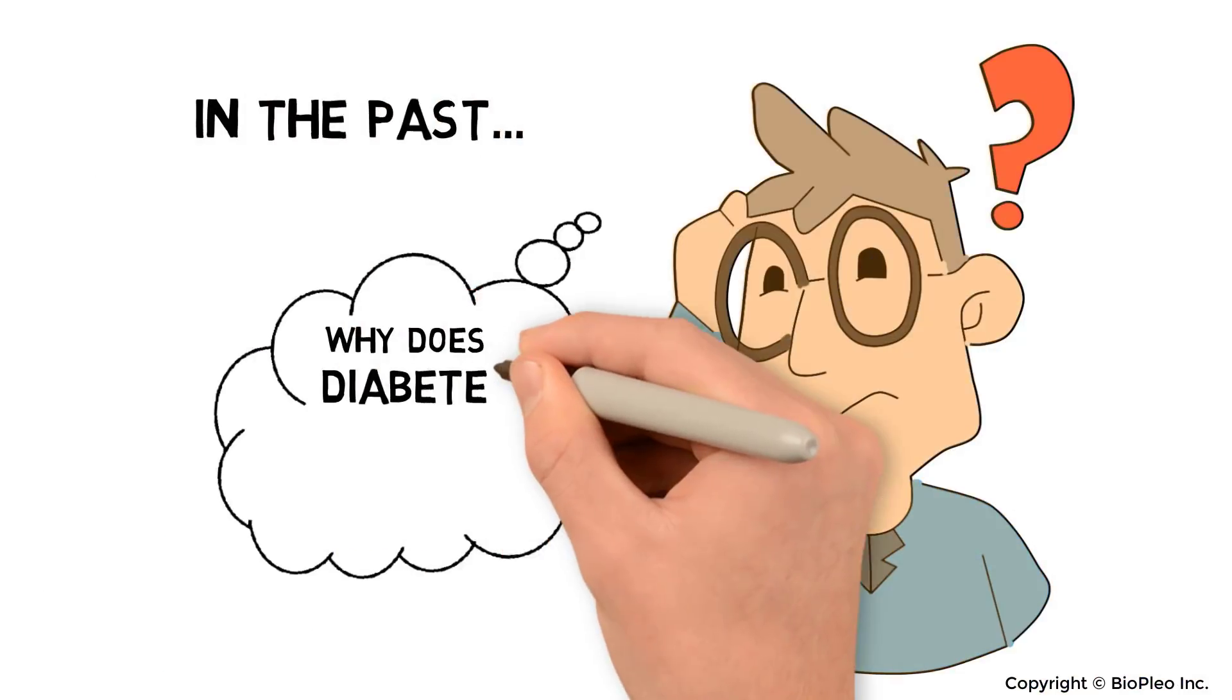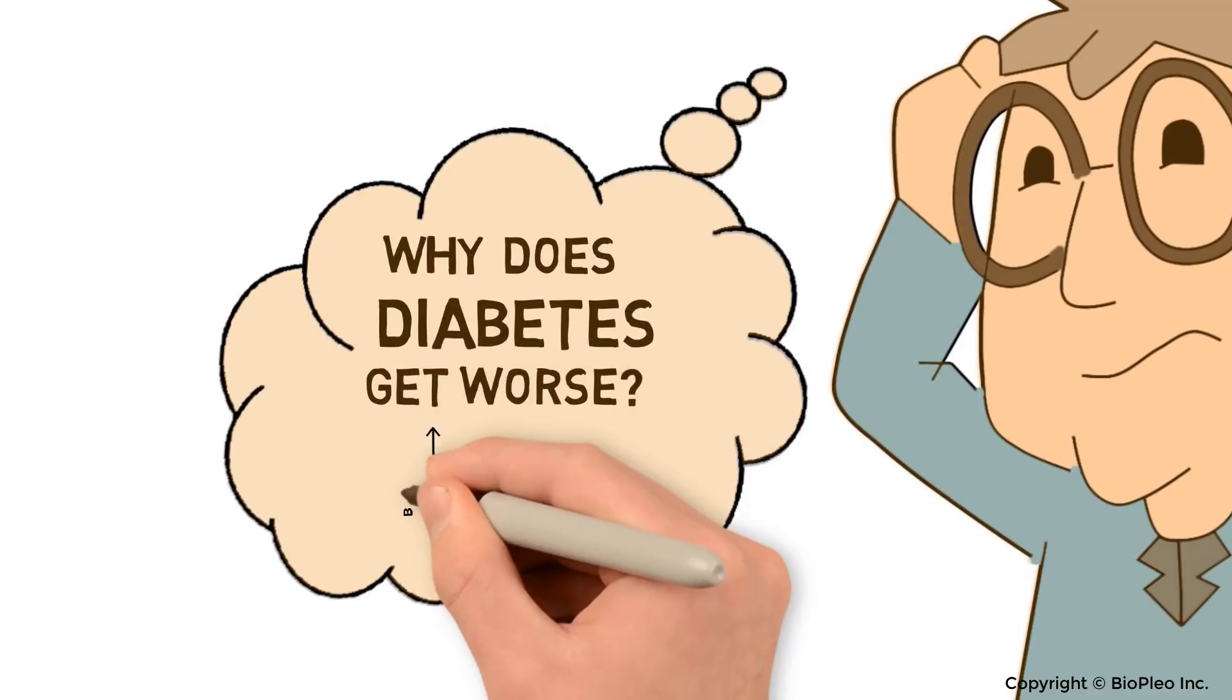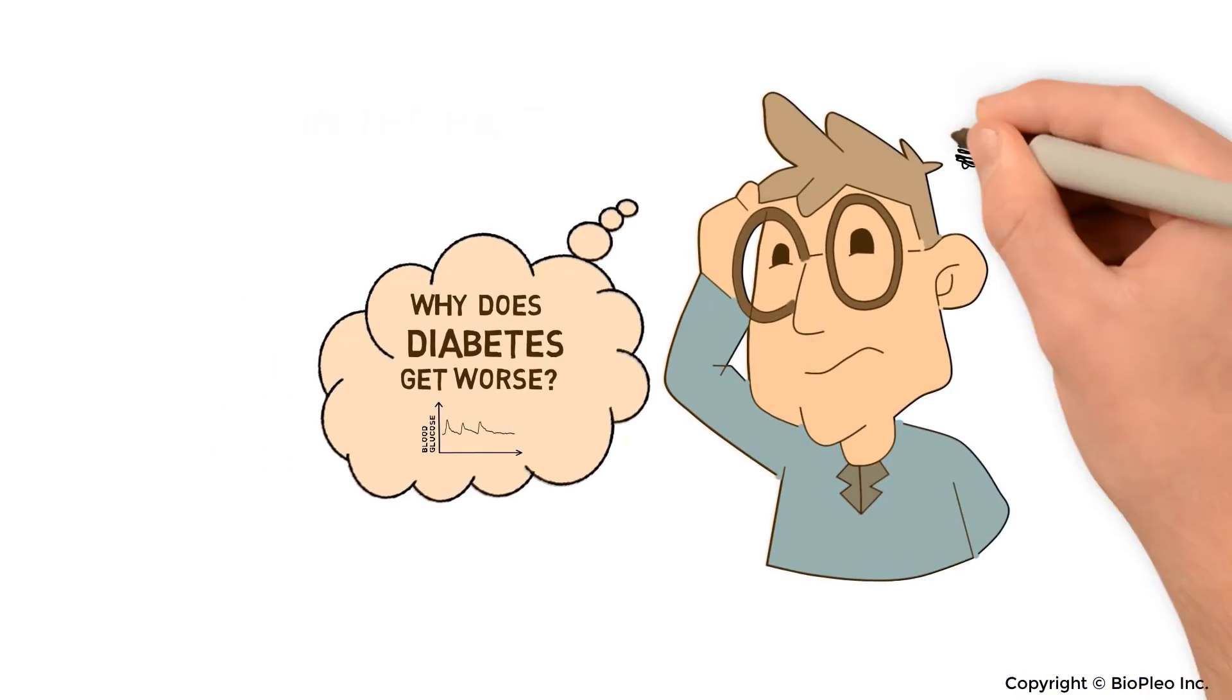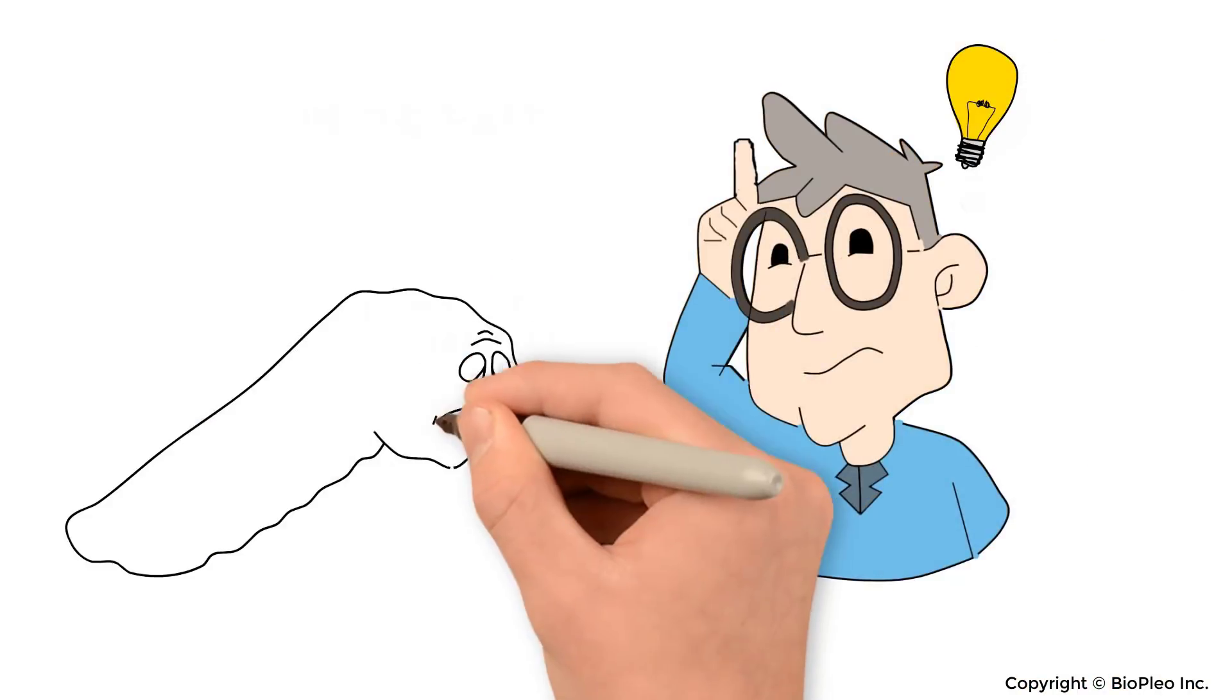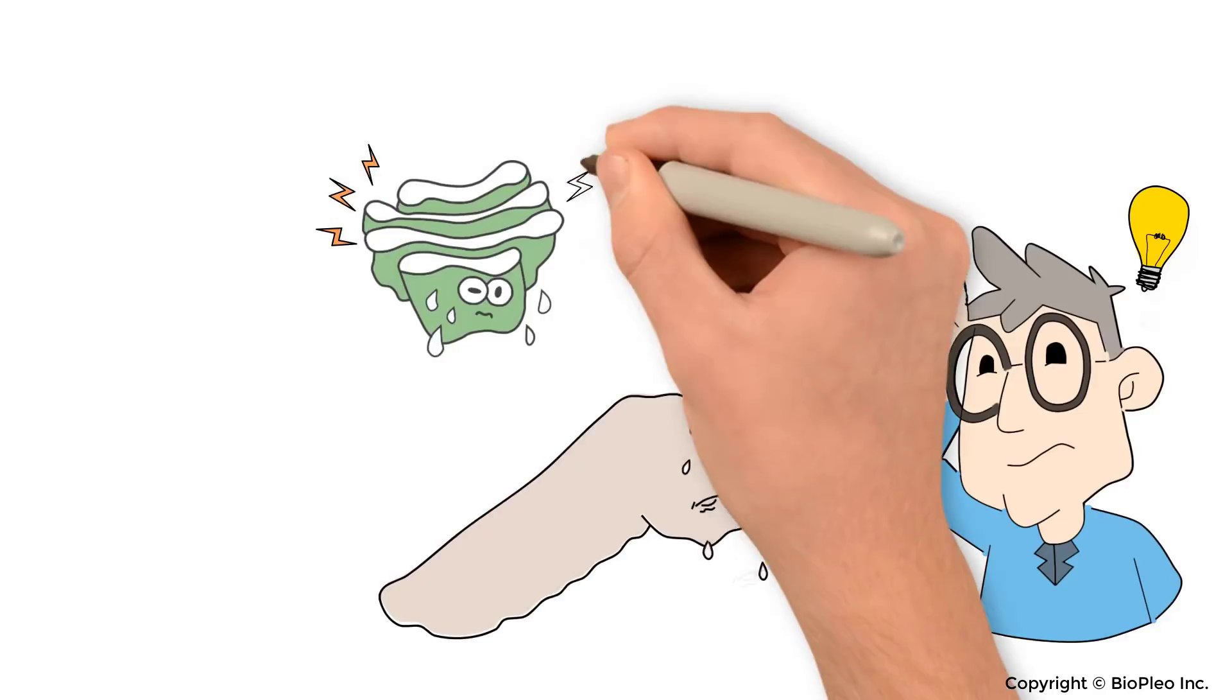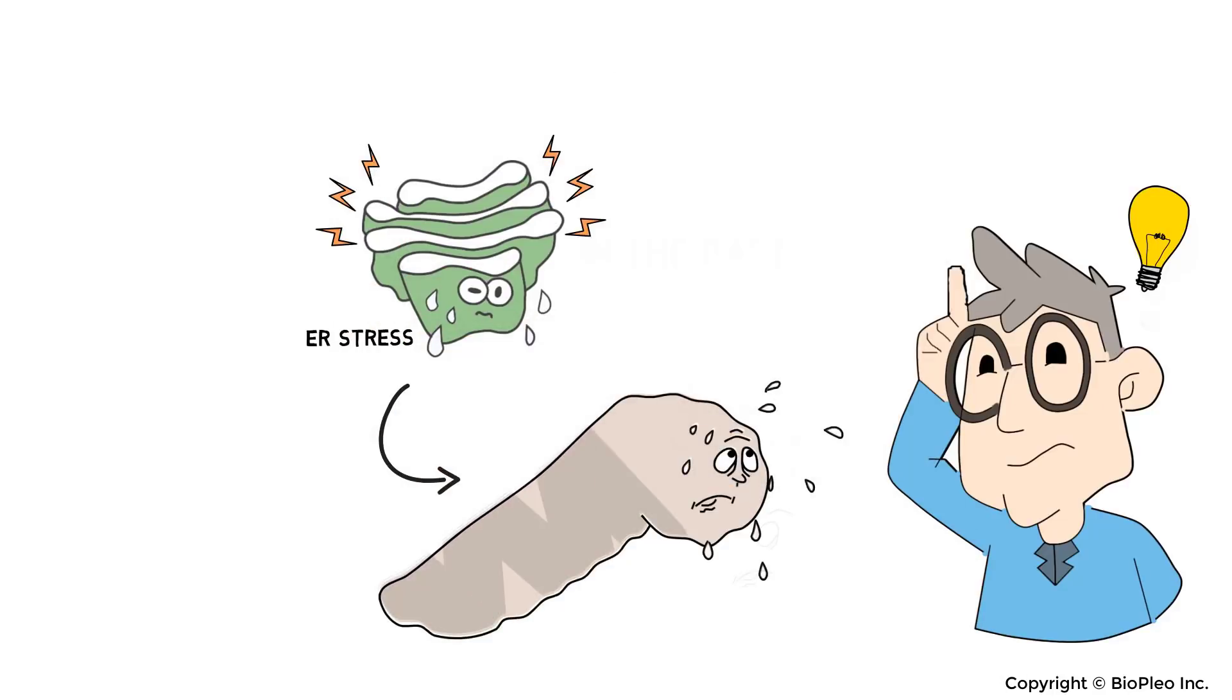In the past, it was unclear why diabetes gets worse, even when blood sugar levels have been well maintained by medications. However, as our knowledge has increased, we now understand that the progression of diabetes itself reflects largely how fast the ER stress kills pancreatic beta cells.